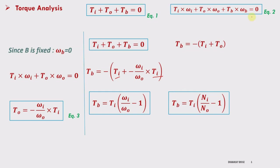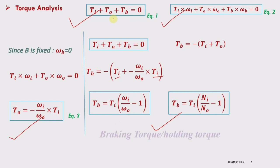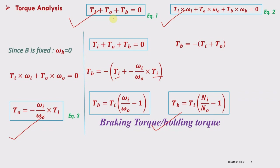While solving numericals on torque analysis, remember these equations: equation one (Ti + To + Tb = 0), equation two (summation of T·ω = 0), equation three for output torque, and the equation for braking torque. For solving problems, making use of equation one and two is sufficient. This is called braking torque or holding torque.